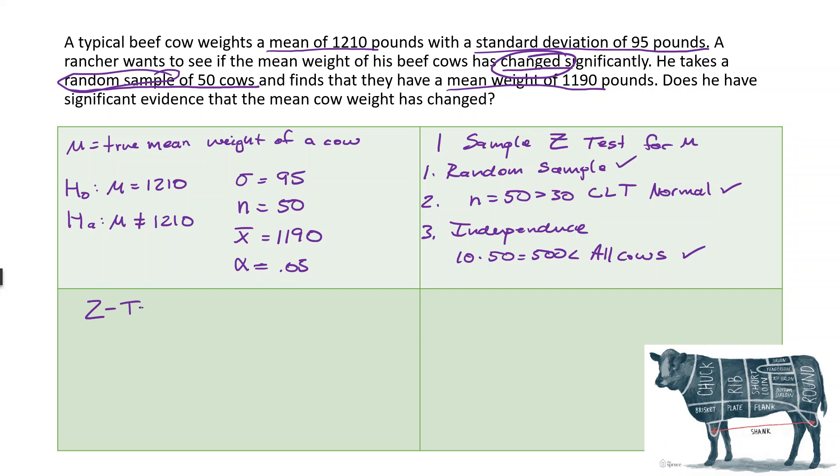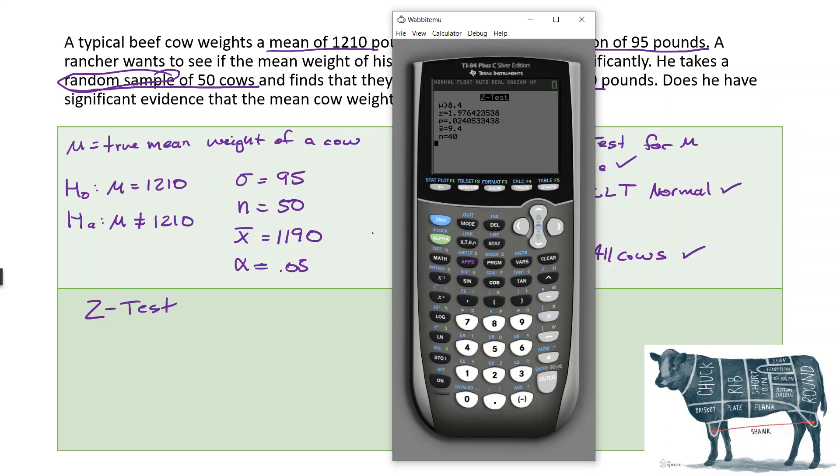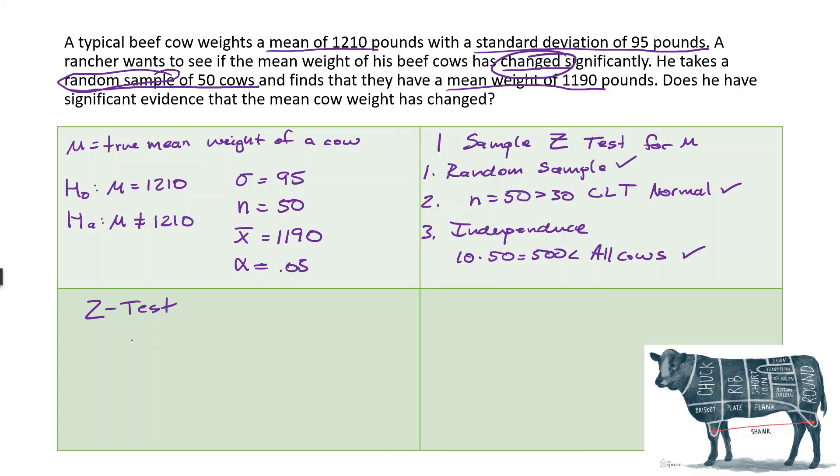Now we're going to our calculator and we're going to do our Z test. If we're going to do this by hand, we'd have to do two-sided. So that's why we like the Z test. It does it for us. It takes care of the two-sidedness already. So we go to Z test. We've got 1210 for our null hypothesis. Our standard deviation is 95 pounds. Our sample mean is 1190. Our sample size was 50. And we want to see change. So not equal to is the one we want. That's the first one. And calculate. And we just want our p-value. There it is, 0.1365. So our p-value, we just need the first two digits, 0.13.